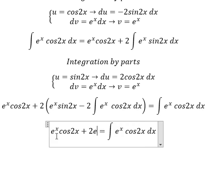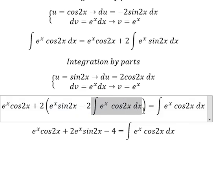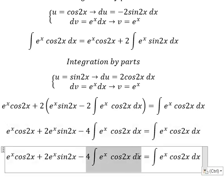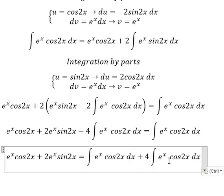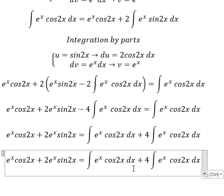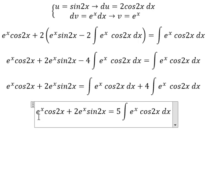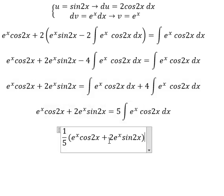Collecting terms, we have e to the power of s sin(2s) with a factor of 2, and then negative 4 times the original integral. Moving that term to the left side gives us 4 plus 1 equals 5 times the integral. We divide both sides by 5 to get the final answer, and we add the constant C.